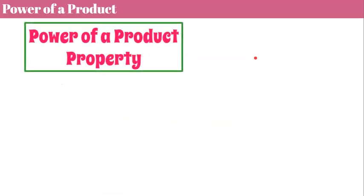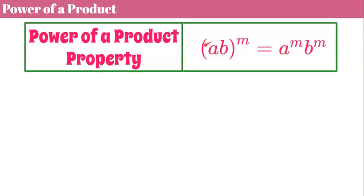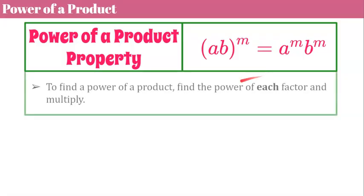Alright, here's our third property for today, power of a product. So the power of a product property states that if you have two different factors inside the parentheses and an exponent outside, both factors get raised to that power. So to find a power of a product property, find the power of each factor and multiply.